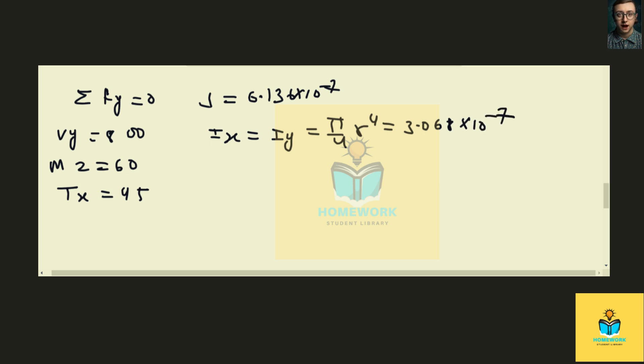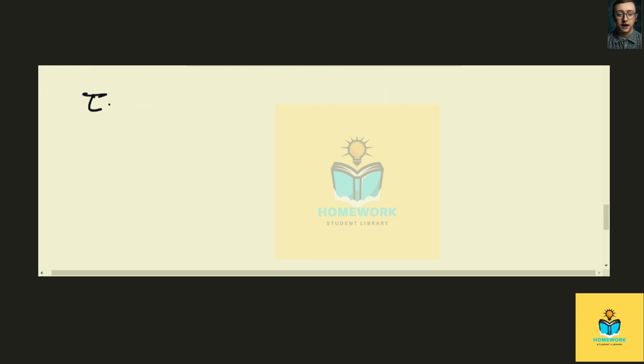Now we have tau b. Tau b equals to tau b cube vy by iy t. Putting the value, we get it as 0.543.